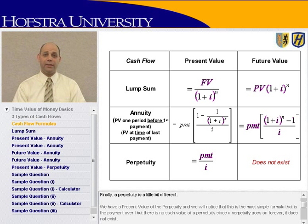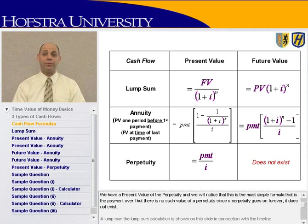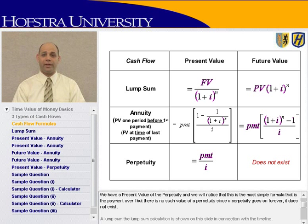Finally, the perpetuity is a little bit different. We have a present value of a perpetuity, and you'll notice that's the most simple formula — that's the payment over I. But there is no such thing as the future value of a perpetuity. Since a perpetuity goes on forever, it does not exist.